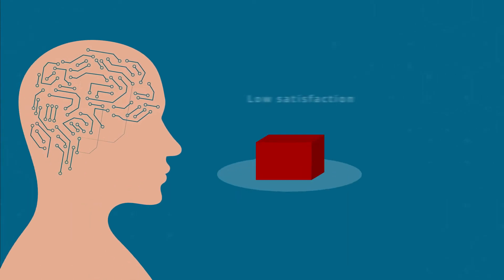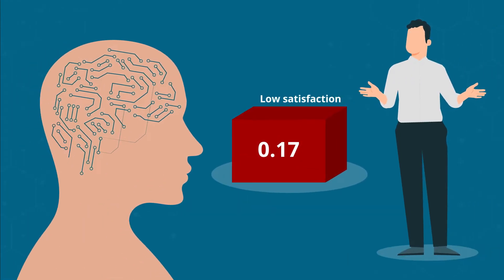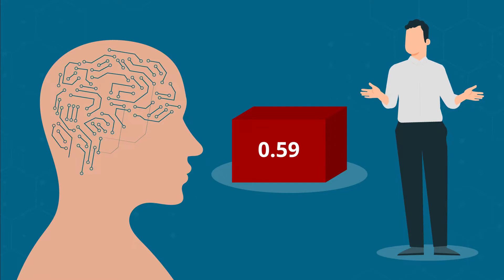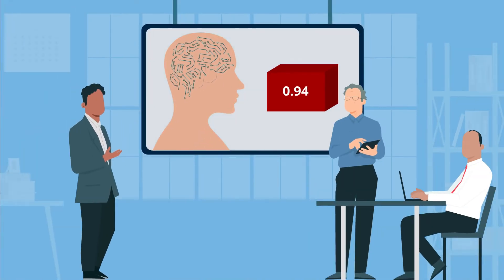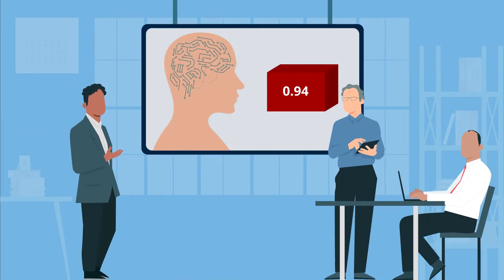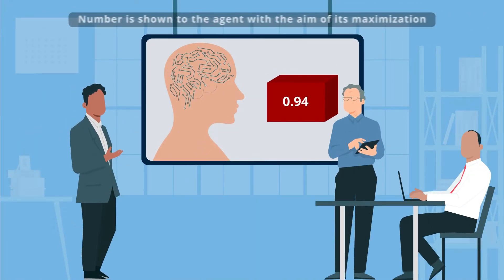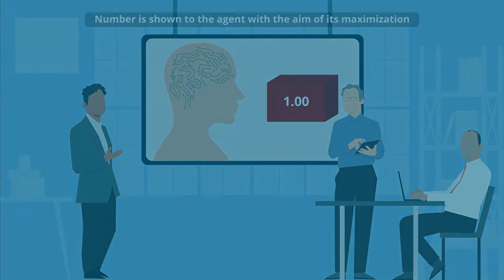They began with an example in which the agent's operators know what they want and have a magic box to report their satisfaction with a number between 0 and 1. The researchers then examined the scenario where this number is shown to the agent with the aim of maximizing it.